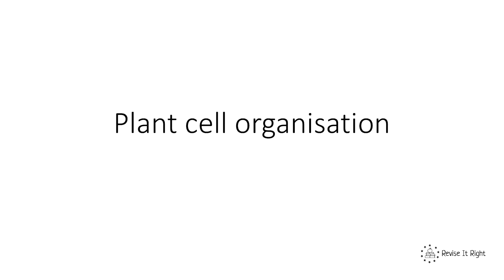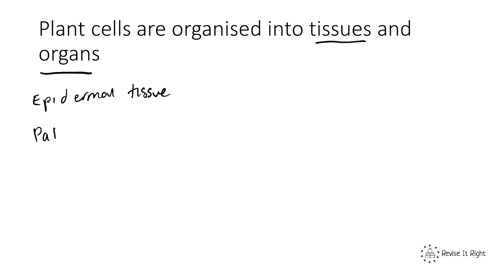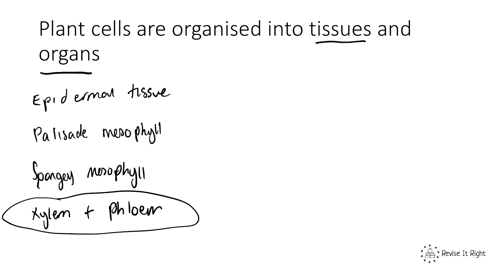This video is about plant cell organization. Plant cells are organized into tissues and organs, which are made up of cells, just like animals. Some examples of plant tissues we need to be aware of are the epidermal tissue, the palisade mesophyll, the spongy mesophyll, the xylem and phloem, which we'll look at in the next video, and meristem tissue.